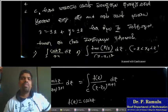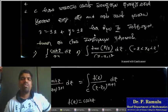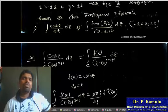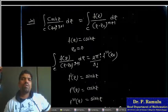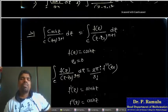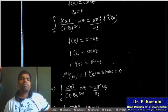Problem: C is a closed contour on domain D. Integration over C of F(z)/(z − z₀)ⁿ dz equals 2πi by 3 factorial times F triple derivative of z₀.